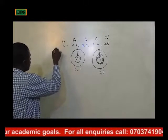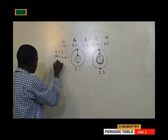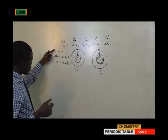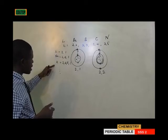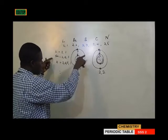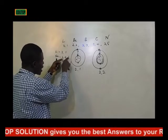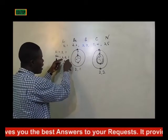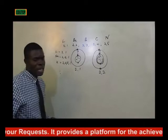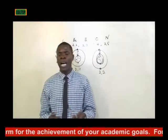Down the group — consider lithium (2-1), sodium (2-8-1), potassium (2-8-8-1), and so on. As you move down the group, atomic number increases and the distance between the valence electron and the nucleus becomes wider. The attraction is less, so the electron can be more easily knocked off. Therefore, ionization energy decreases down the group.